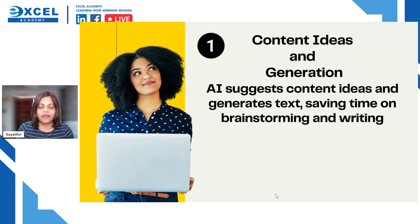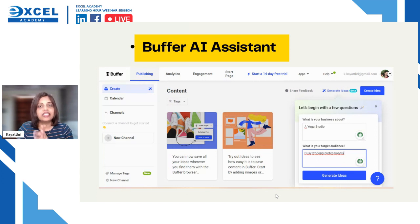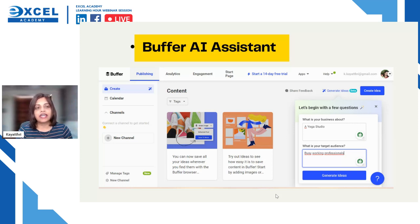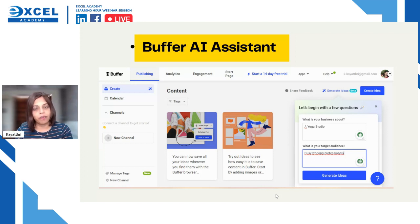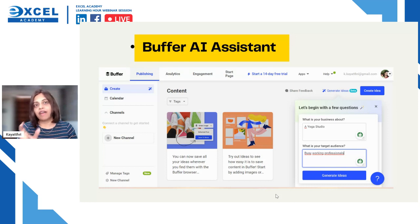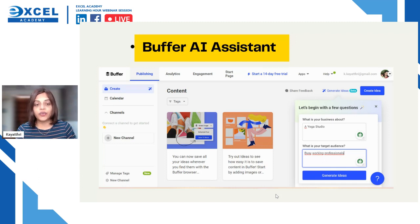The first tool I'm going to suggest is Buffer. Many of you may have heard of Buffer — it's an analytical tool that helps you publish content to your social media platforms and gives you insight about engagement and analytics. What we're focusing on now is how to use AI in Buffer, specifically the new feature called Buffer AI Assistant.